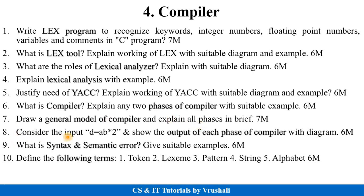Either they will ask to explain all phases of the compiler, or they will give a particular input like 'consider the input D = AB * 2 and show the output of each phase of the compiler with a diagram for six marks.' You should use this example and explain all phases with the diagram. Do not skip this question. The next question is what is a syntax error and semantics error — give suitable examples for six marks. And: define the terms tokens, lexemes, patterns, string, and alphabet for six marks. Prepare all lexical analysis questions and the general model of the compiler completely.